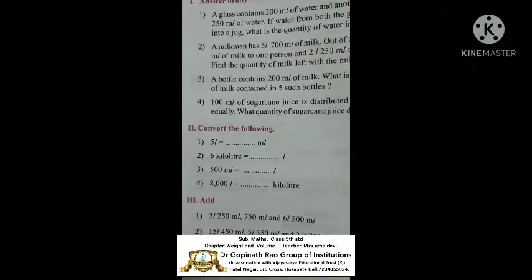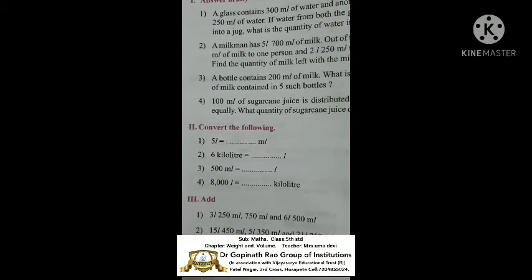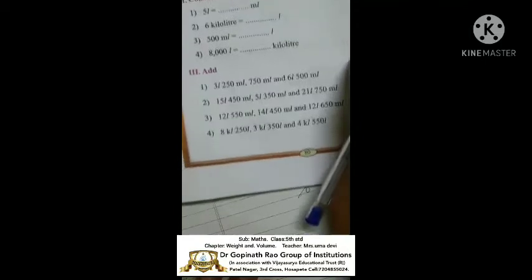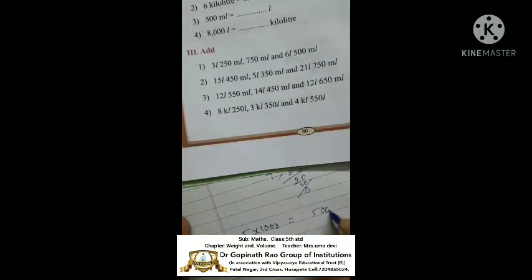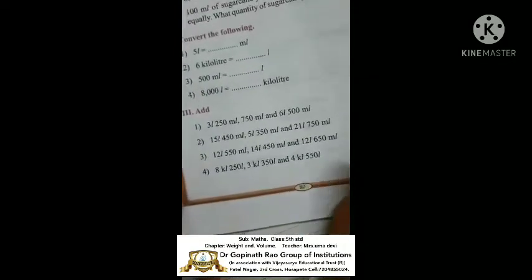Second section: Convert the following. Remember — big to small, use multiplication; small to big, use division. First: 5 litres equals how many millilitres? Litres is bigger, millilitres is smaller. One litre equals 1000 millilitres, so 5 into 1000 equals 5000 millilitres.